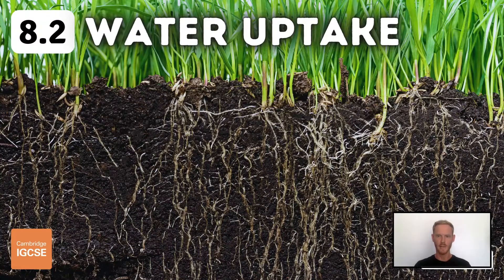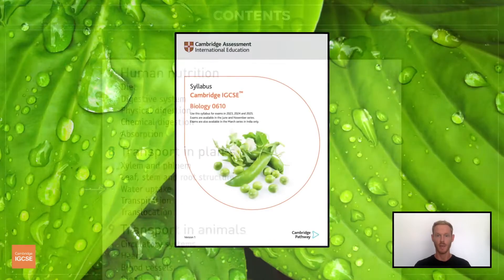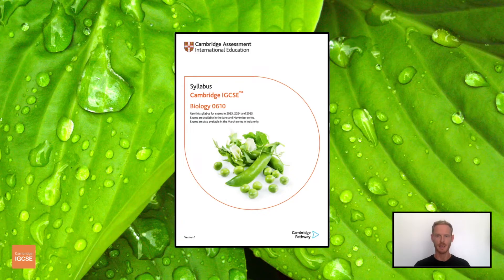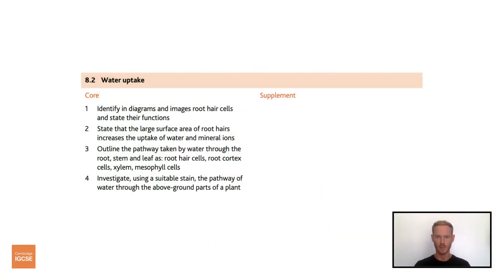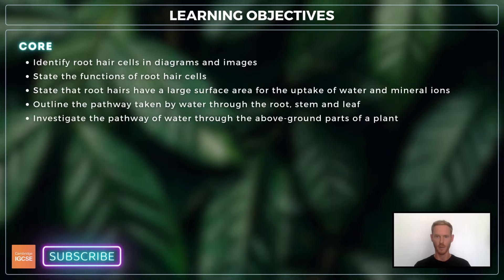Hello and welcome to another complete Cambridge IGCSE biology lesson, where you'll learn absolutely everything you need to know on topic 8.2, water uptake. As always, we'll be following the Cambridge syllabus exactly. For topic 8.2, you need to identify and state the functions of root hair cells, outline the pathway taken by water through the plant, and investigate the pathway of water using a suitable stain. There's no extended supplement for this one.